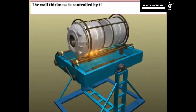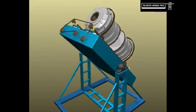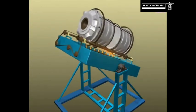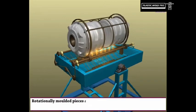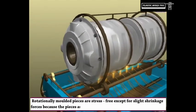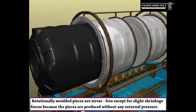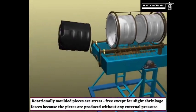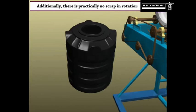The wall thickness is controlled by the amount of powder placed in the mold. Rotationally molded pieces are stress-free except for slight shrinkage forces because they are produced without any external pressure. Additionally, there is practically no scrap in rotational molding.